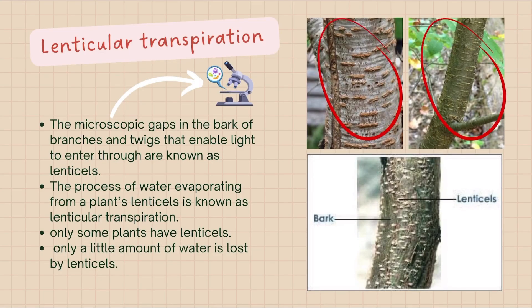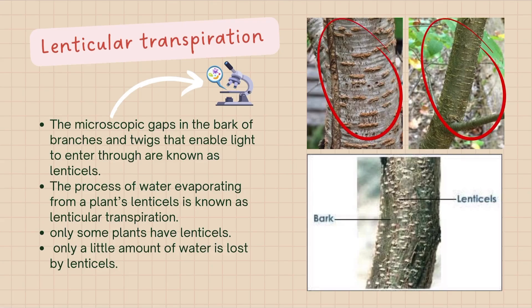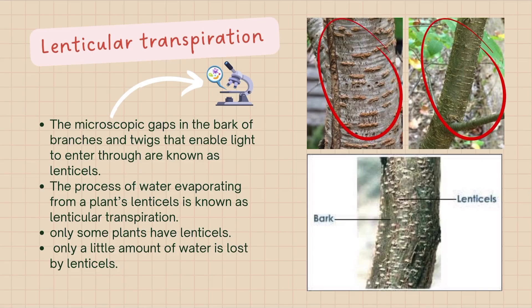The microscopic gaps in the bark of branches and twigs that enable gas exchange are known as lenticels. The process of water evaporating from a plant's lenticels is known as lenticular transpiration. Only some plants have lenticels, and only a little amount of water is lost through them.